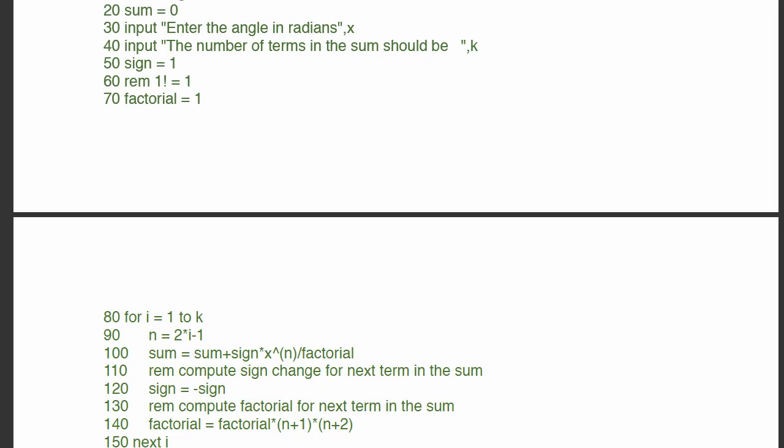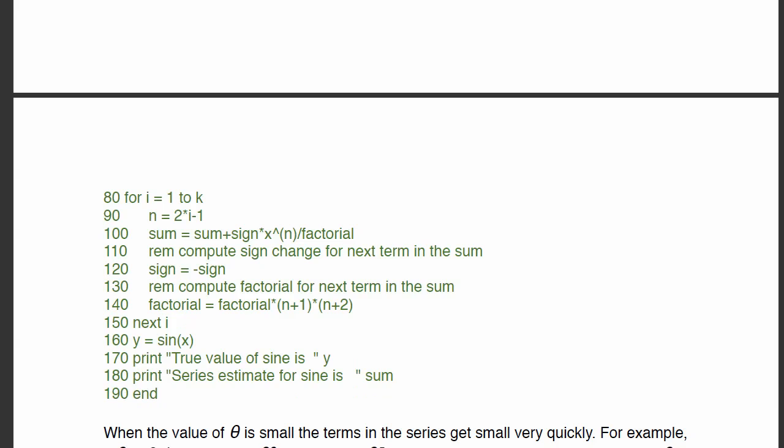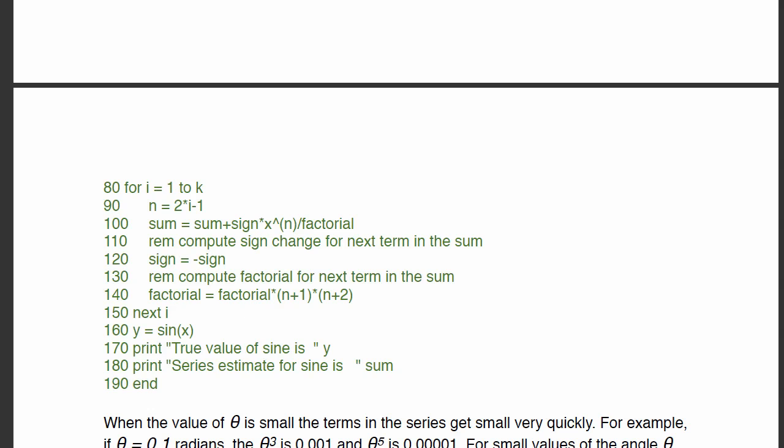Then we add up the terms: the new value of sum equals the old value of sum plus sign times x to the n divided by factorial. This is how the program executes that sum, iterating for all k values of i and accumulating the total. Then we print out the true value of sine x — using the sine function built into basic language — and we also print out the series estimate for sine, which is our variable sum. Try different values of k and make sure you understand how the program executes.